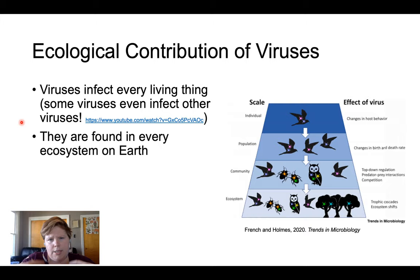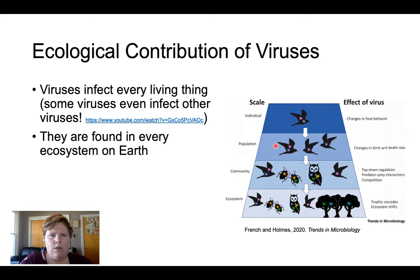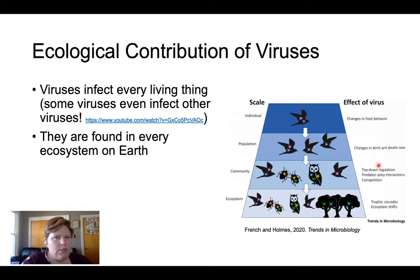Viruses are found in every ecosystem on earth. Some viruses might infect a single species, changing host behaviors. Some infect multiple species but only really impact one — you'll see an example in your lab activity. It can be at an individual or population level, influencing how many offspring there are in a specific species. Depending on what a virus infects, it might influence predator-prey interactions — if a predator gets sick, prey populations can increase, and vice versa.